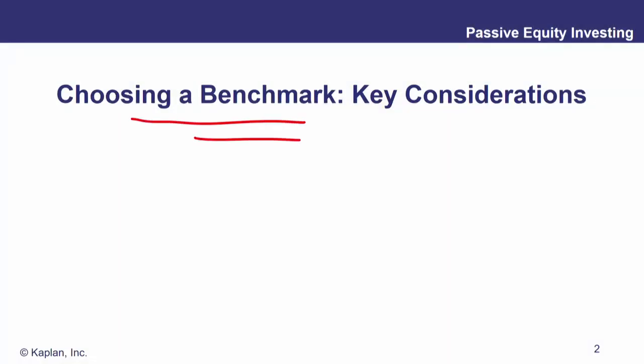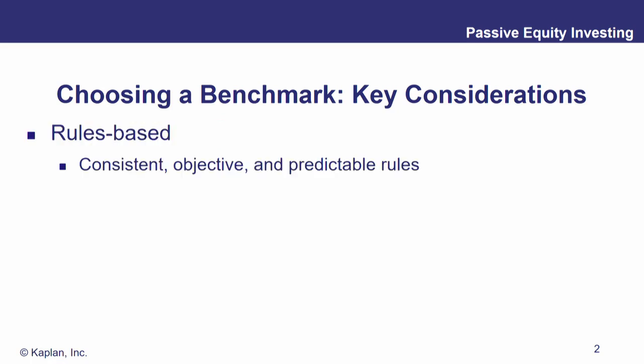Let's talk about choosing a benchmark — what are some key considerations? First of all, it's going to have to be rules-based. It's going to have to have consistent, objective, and predictable rules. Your client has to understand, the portfolio manager has to understand — how does somebody get chosen for this benchmark? Is it the S&P 500, the Russell 2000, the Wilshire 5000? Whatever you're using, we need rules-based, consistent, objective, and predictable.